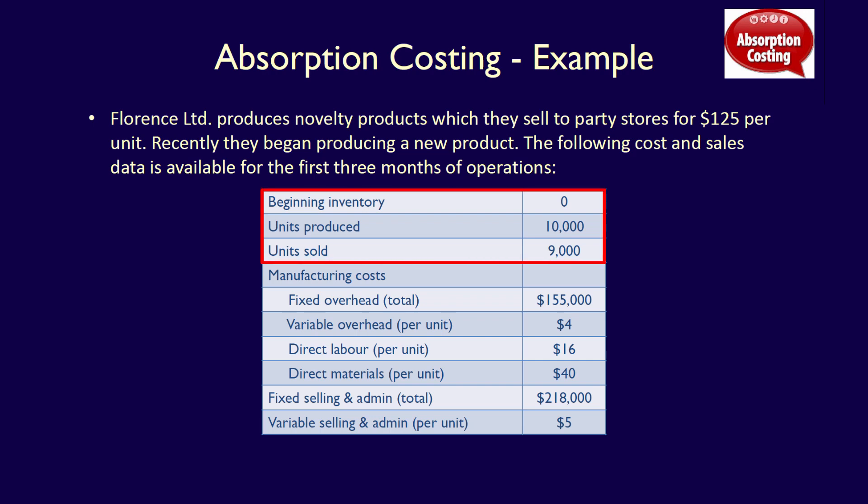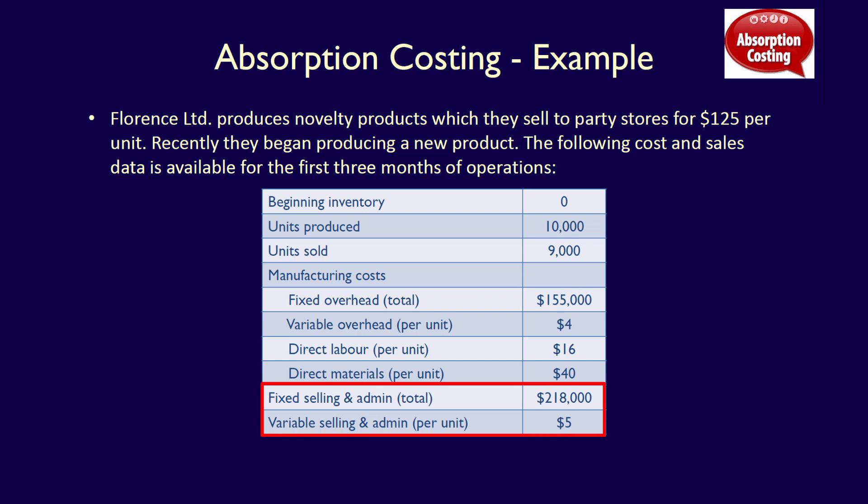Beginning inventory in units was zero — it is a new product, after all. Units produced: 10,000. Units sold: 9,000. Manufacturing costs: fixed overhead in total $155,000; variable overhead per unit $4; direct labor per unit $16; direct materials per unit $40. Non-manufacturing costs include fixed selling and administrative costs totaling $218,000, and variable selling and administrative costs of $5 per unit sold.